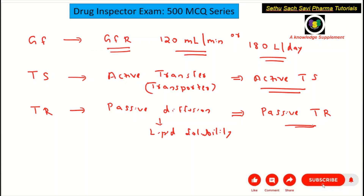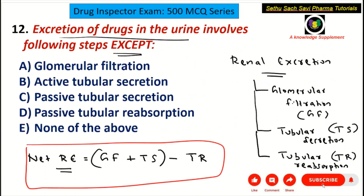To summarize: glomerular filtration rate is 120 ml/min; tubular secretion is active; tubular reabsorption is passive. Coming back to the question — Choice C states 'passive tubular secretion,' but tubular secretion should be active, not passive. Therefore, passive tubular secretion is not a real process in renal excretion. The correct answer is C: passive tubular secretion.